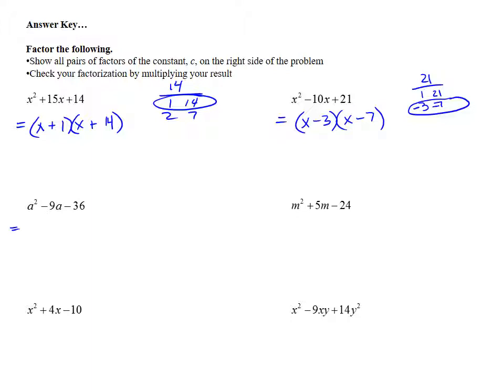A squared minus 9a minus 36. Set up your parentheses. A squared goes to a and a. Negative 36 is going to be factored. I need one negative and one positive. I'll start with a negative at the beginning. Negative 1, 36. Negative 2 and 18. Negative 3 and 12. Negative 4 goes in 9 times. Negative 5 won't go in. Negative 6 will go in 6 times.